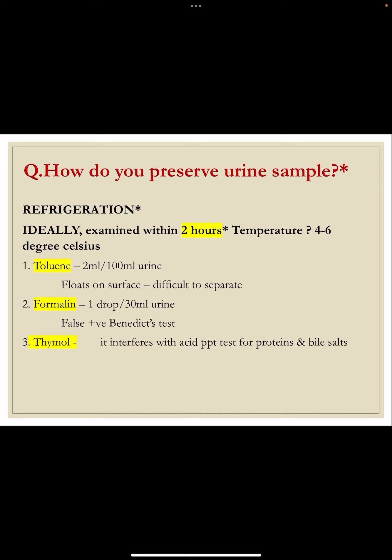The urine sample given to the laboratory should be examined within 2 hours. As time passes, urea in urine is converted to ammonia, causing the pH to increase. Chemical components like glucose, bilirubin, and ketones decrease with time. The color will darken, clarity decreases, and the odor becomes more offensive. If not examined within 2 hours, the sample should be refrigerated between 4 to 6 degrees Celsius — this is a viva question.